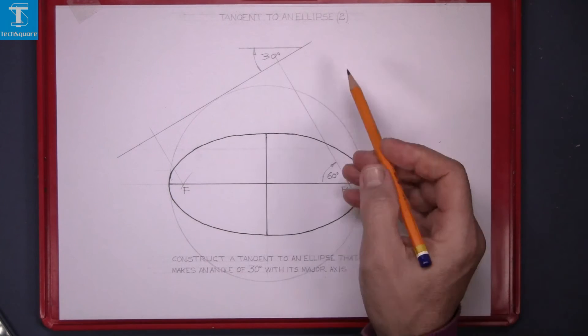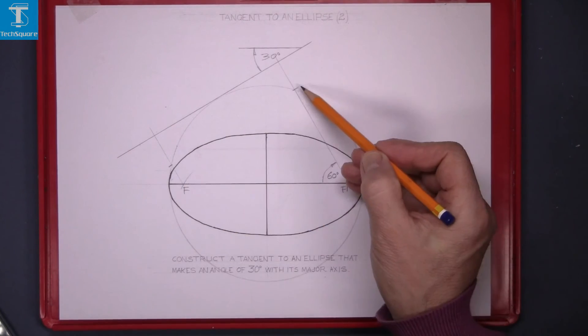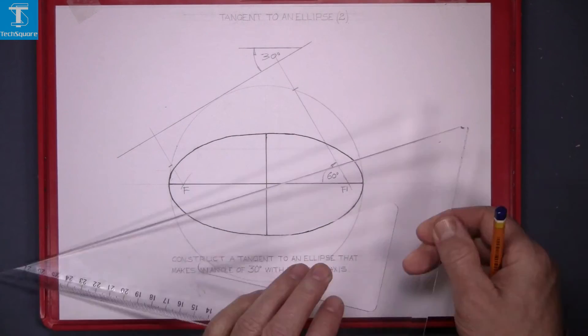Now where the major circle intersects the 60 degree line, that gives you two points, and if you join those two points, that gives you the tangent.